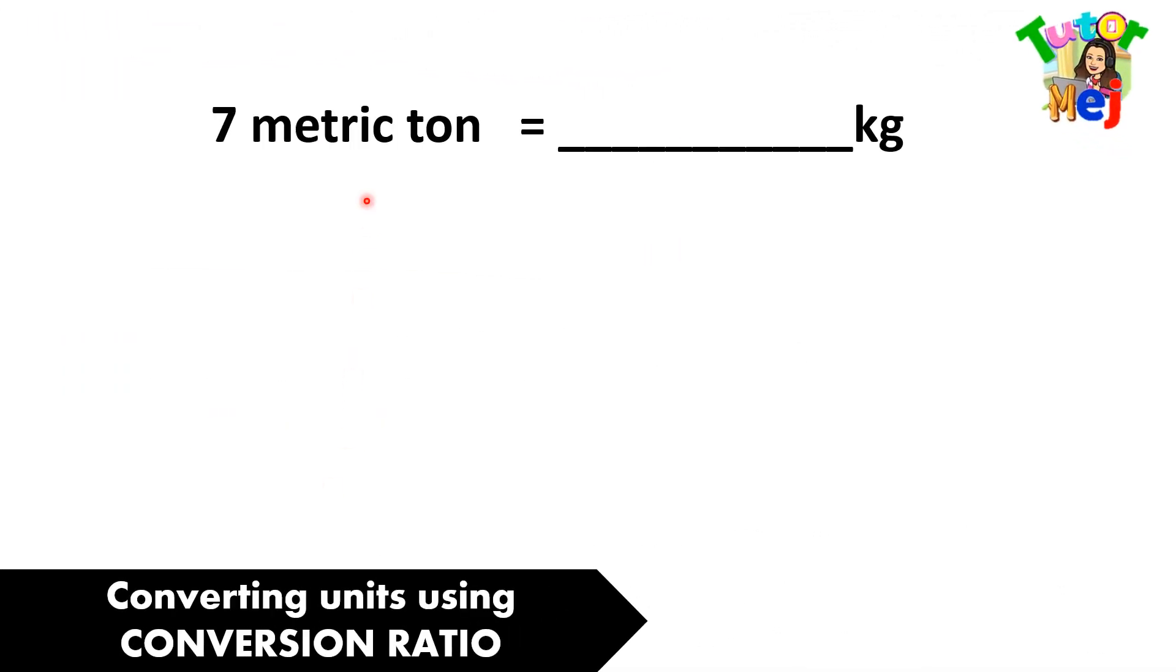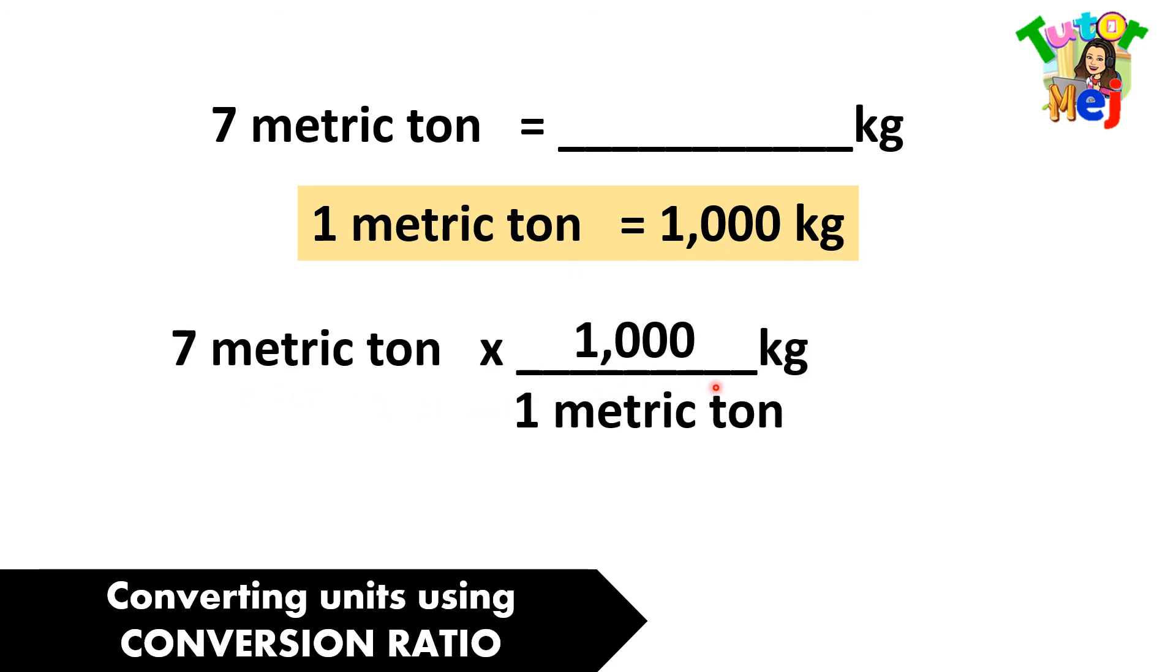Let us convert 7 metric tons to kilograms. We write the ratio: 1 metric ton equals 1,000 kilograms. Now, we multiply 7 metric tons times 1,000 kilograms over 1 metric ton.